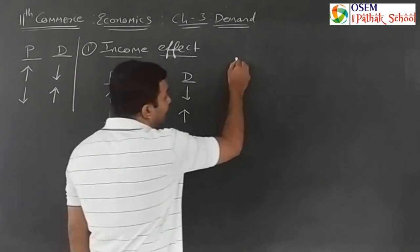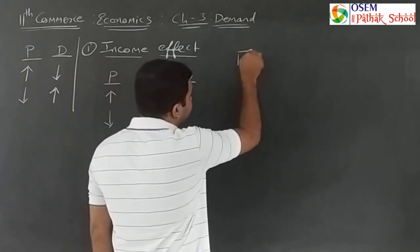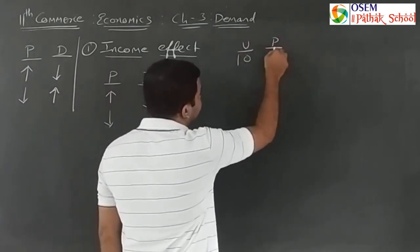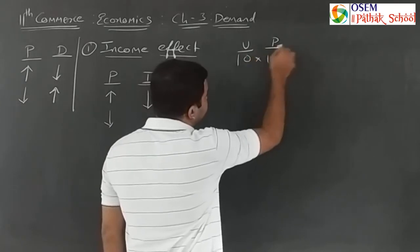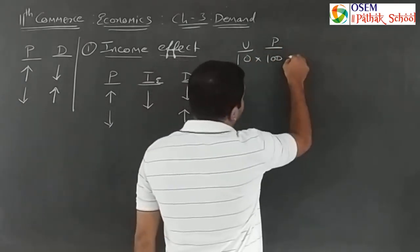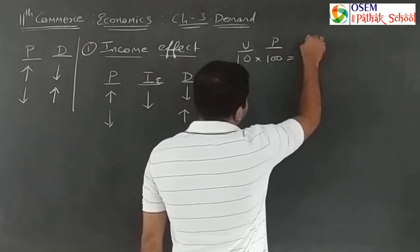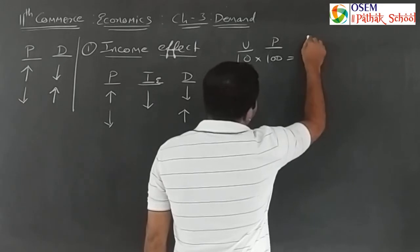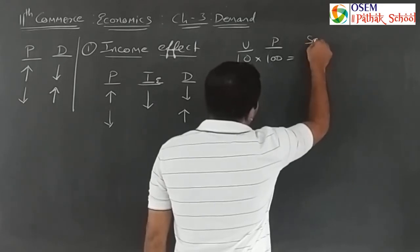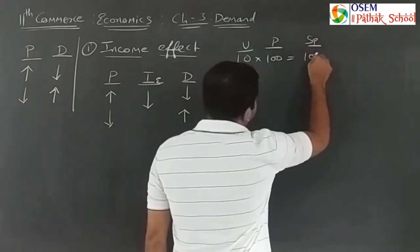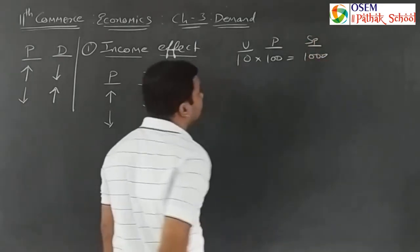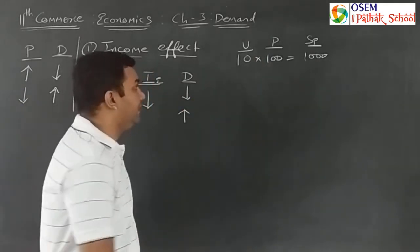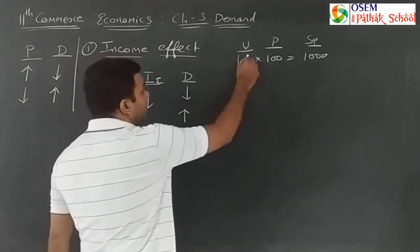For example: 10 units were purchased at a price of 100 rupees each, so the total amount spent was 1000 rupees. At 100 rupees price, 1000 rupees were spent.